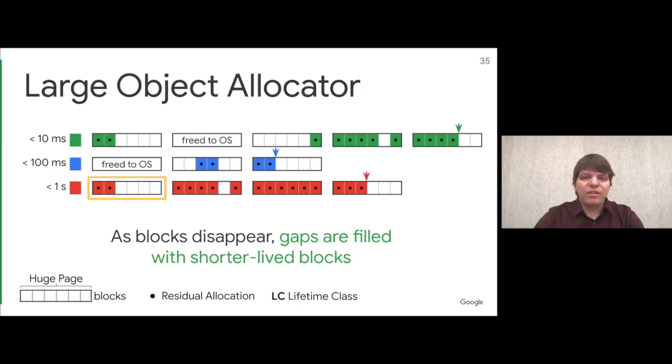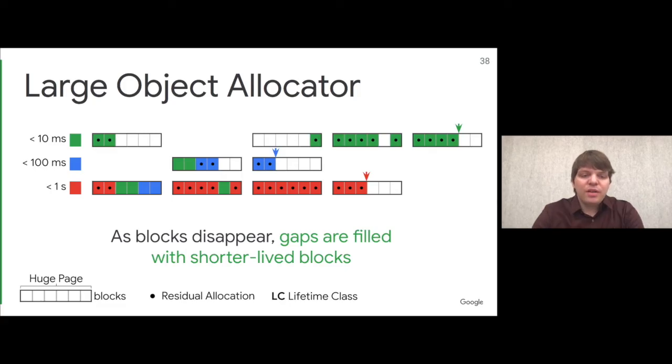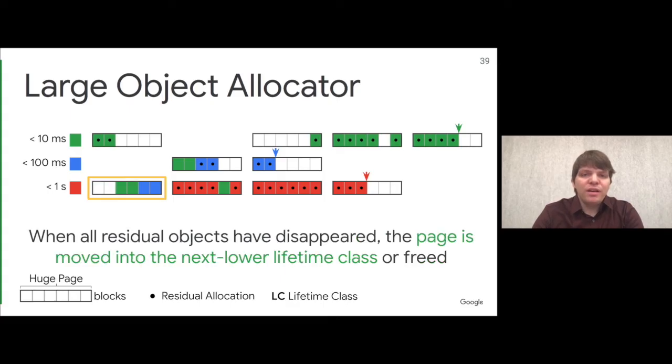The key idea is that we fill the gaps between residual blocks with shorter-lived blocks. For example, if you consider this one-second page with two residual blocks of lifetime one second, we fill the gaps with objects of lifetime 100 milliseconds and 10 milliseconds. This gives us a nice invariant: if all predictions were correct, every page will live for at most 1.1x its original lifetime class. At some point, all residual objects will have gone away, and we know everything left is of a shorter lifetime class. We can then reclassify the page.